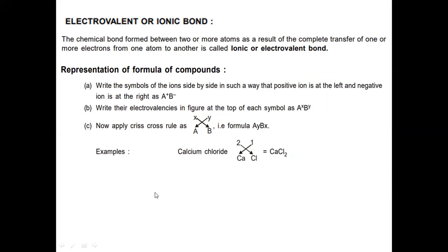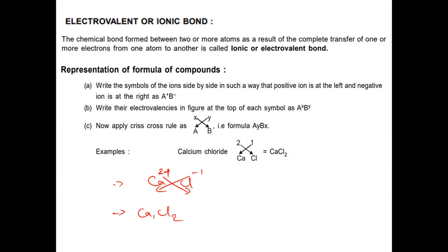How can we represent the formula of a compound? Taking the example of calcium chloride: first, write the cation along with its charge, and similarly write the anion along with its charge. In the second step, cross-multiply the magnitude of the charge with respect to the opposite ions. Chloride has minus one charge; that magnitude is cross-multiplied to calcium, giving Ca₁Cl₂, which is simply called CaCl₂.